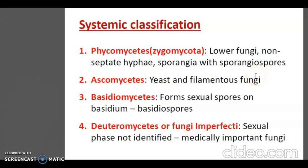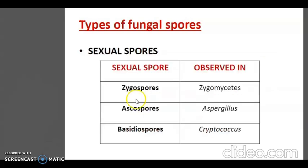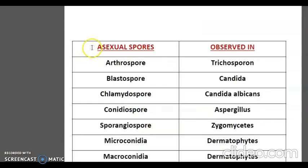Most fungi of medical importance belong to the Deuteromycetes group. Sexual spore types include zygospores in Zygomycetes, ascospores in Aspergillus, and basidiospores in Cryptococcus. Asexual spore types and their locations: arthrospores in Trichosporon, blastospores in Candida, chlamydospores in Candida albicans, conidiospores in Aspergillus, sporangiospores in Zygomycetes, and microconidia and macroconidia in dermatophytes.